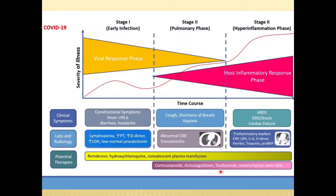PCR tests are used to directly detect the presence of the virus, which is the antigen, in the early stages of the disease. The antibodies, which are produced by the body's immune response, can be detected later on.